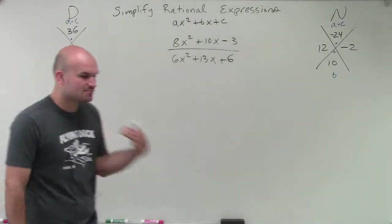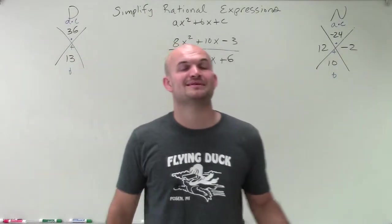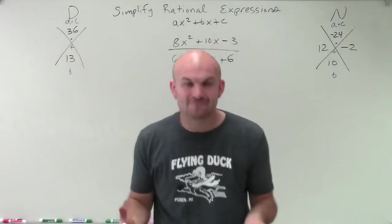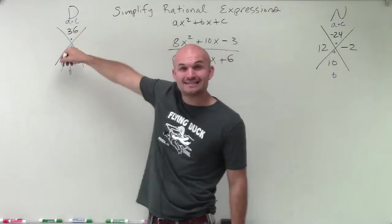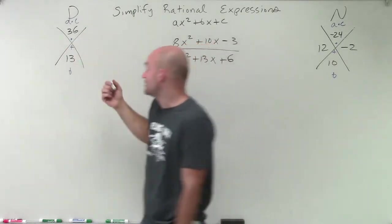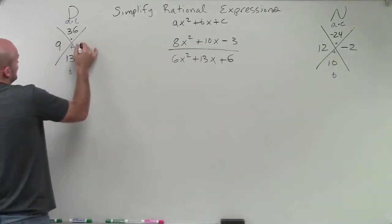Over here, you say, what two values multiply to give me 36, but add to give me 13? Now, both the factors have to be positive, because rather than just multiplying to make us positive, they have to add to give us positive as well. So they both can't be negative. And those two factors are going to be 9 and 4.